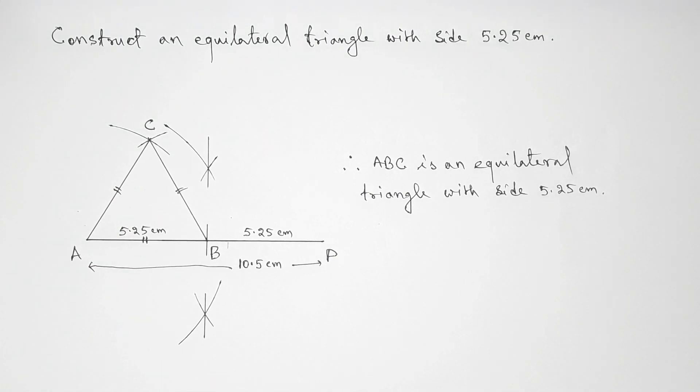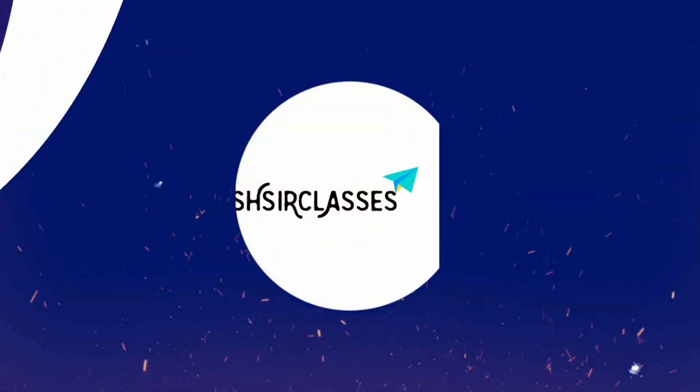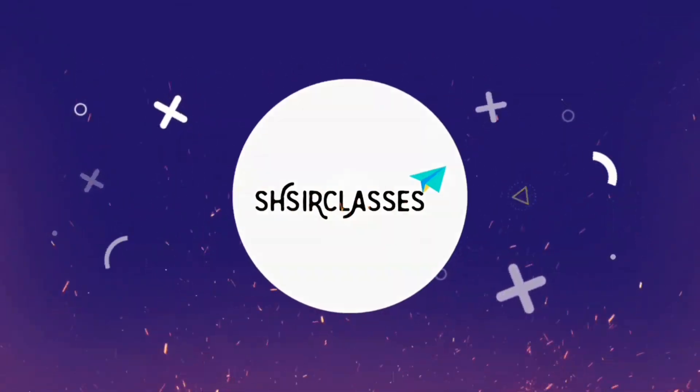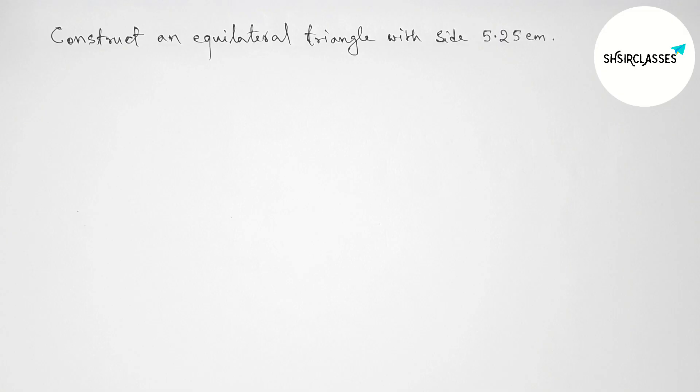In this video we have to construct an equilateral triangle with side 5.25 centimeters in an easy way. First of all, let us start.